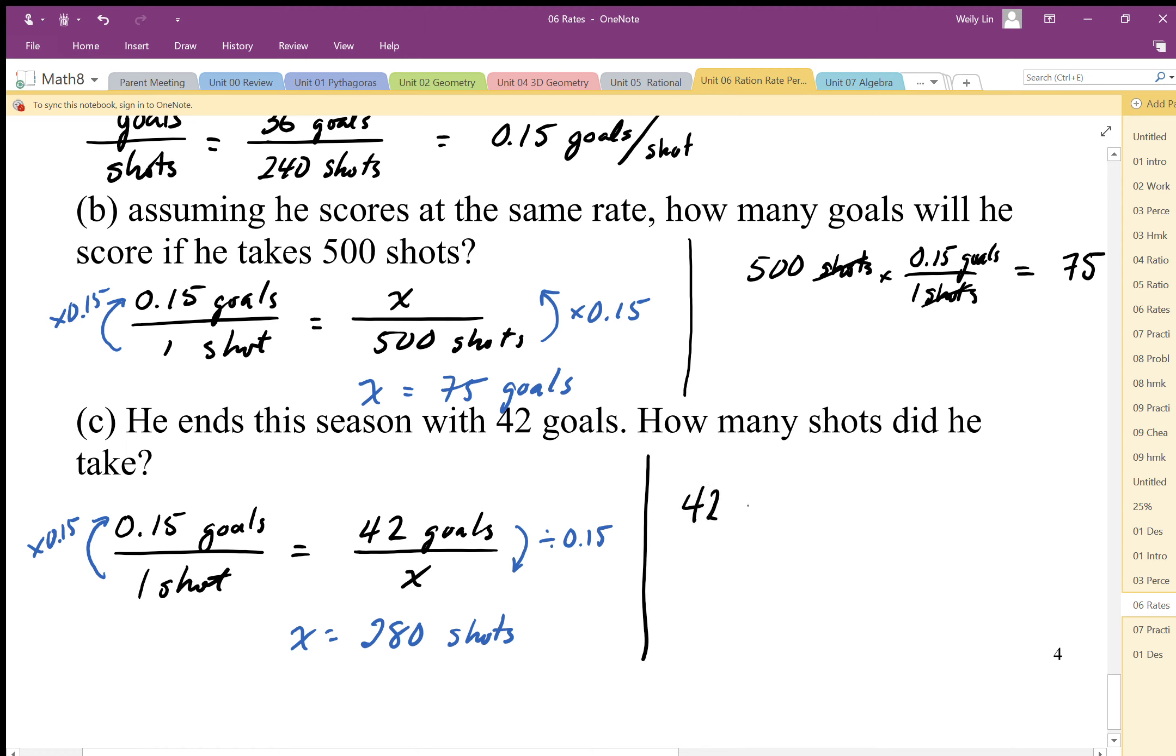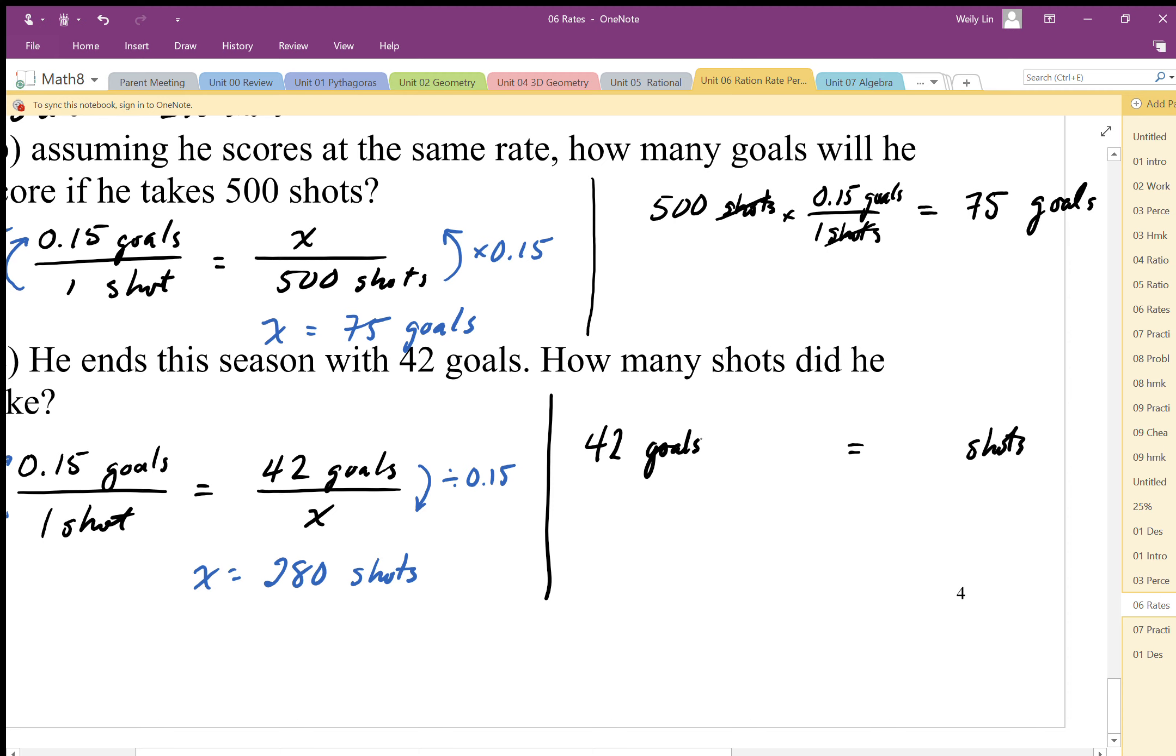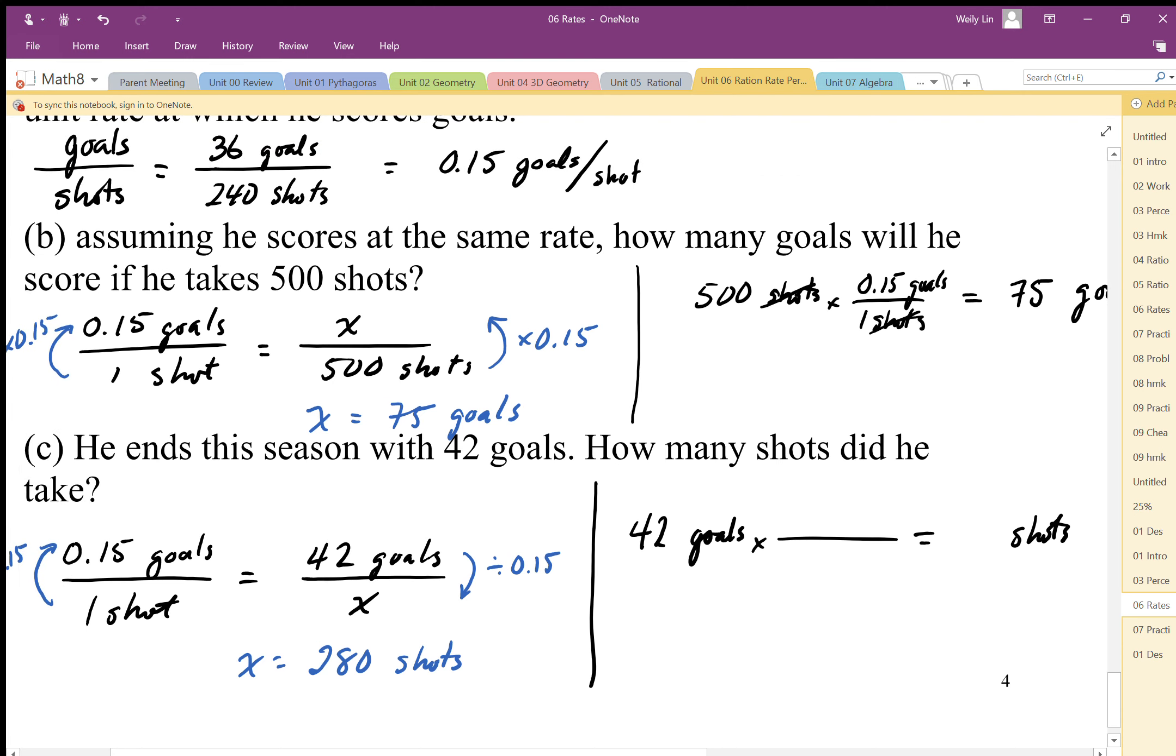What does this look like with our multiplying strategy? We start with goals and end up with shots. To do that, we have to have the goals units in the denominator. Although I could use my unit rate of one shot for 0.15 goals, I'm going to use the original rate. To make sure the goals cancel out, I have to put my goals in the denominator, so the 36 goals goes down here, which gives me 240 shots. Goals cancel with goals; times here, divide here cancel. Times on top, divide on bottom—don't times both.